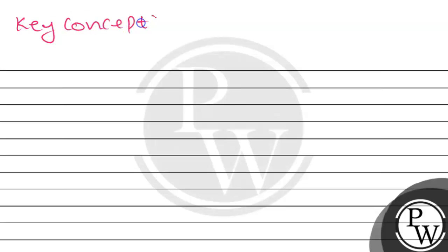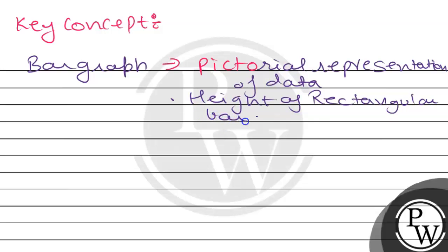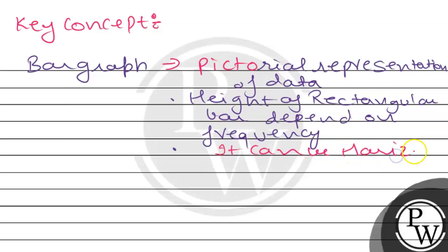First, I will tell you the key concept that will help in solving this question. A bar graph is a pictorial representation of data. The height of the bar depends on the frequency. It can be horizontal or vertical.